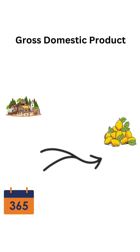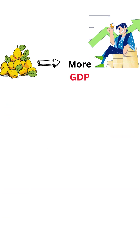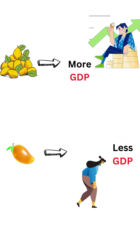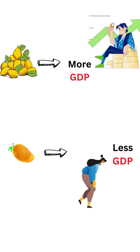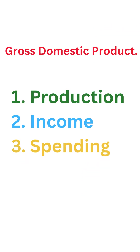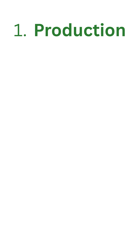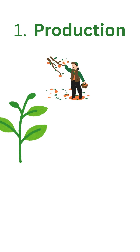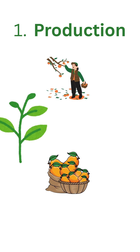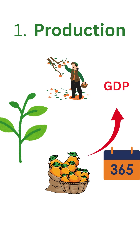In a year: more mangoes, more GDP; less mangoes, less GDP. Simple, right? But we can look at GDP in three ways. Number one: Production — villagers grow mangoes, pick mangoes, sell mangoes. GDP equals all mangoes made this year.